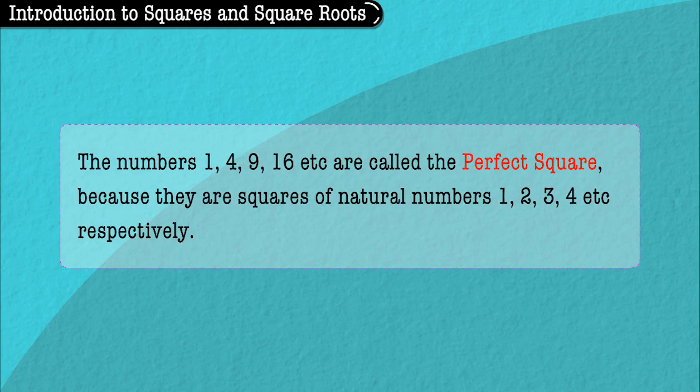Here, the numbers 1, 4, 9, 16, etc. are called the perfect square because they are squares of natural numbers 1, 2, 3, 4, etc. respectively.